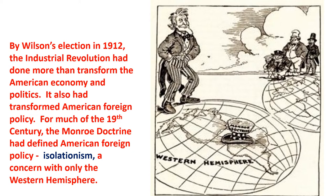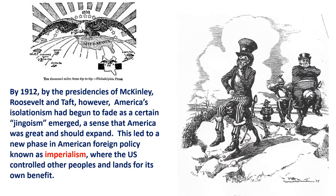The Industrial Revolution is profoundly important — it transforms everything. It did more than just transform the economy and politics; it even transformed American foreign policy. To understand this, you have to understand that for much of the 19th century, the Monroe Doctrine had defined American foreign policy — the policy of isolationism, a concern with only the Western Hemisphere. By 1912, through the presidencies of McKinley, Roosevelt, and Taft, America's isolationism had begun to fade as a certain jingoism emerged — a sense that America was great and should expand. This led to a new phase in American foreign policy known as imperialism, where the United States controlled other people and lands for its own benefit.